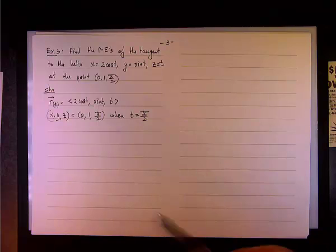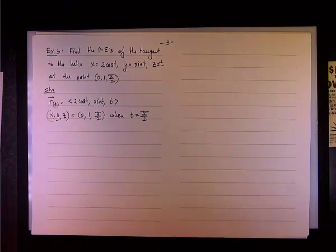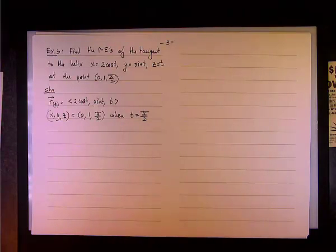So we have the value of t that corresponds to this point. Again, cosine of π over 2 is 0, sine of π over 2 is 1, and t equals π over 2, so everything works well.